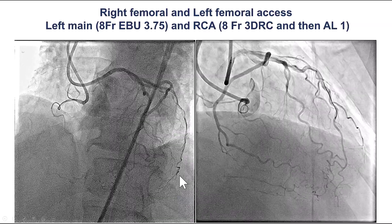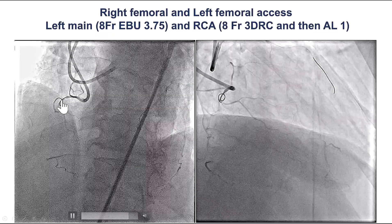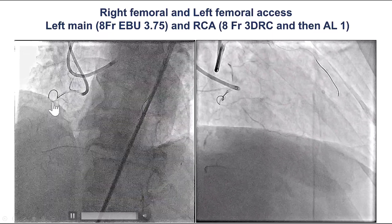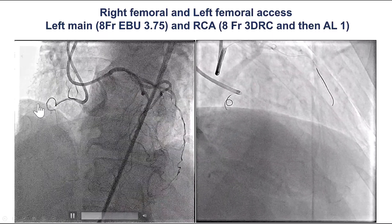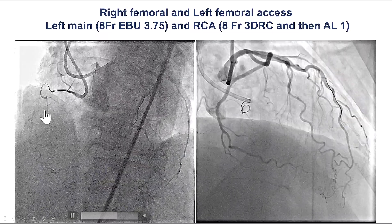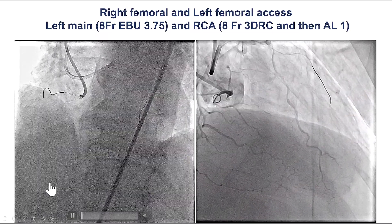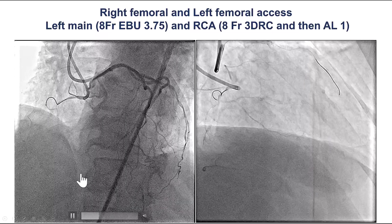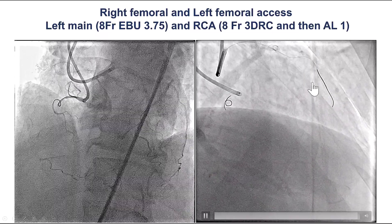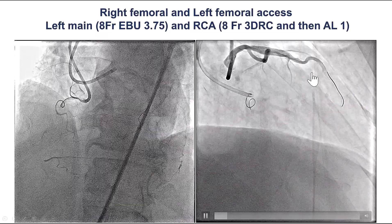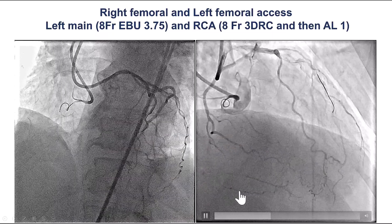This is the dual injection. He did have a CTO with an ambiguous proximal cap at the takeoff of an acute marginal branch. The occlusion length was relatively long, the distal vessel appeared to be diffusely diseased, and there appeared to be septal collaterals and epicardial collaterals supplying the PDA.